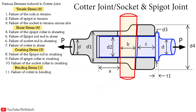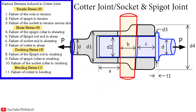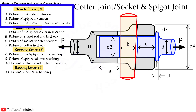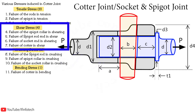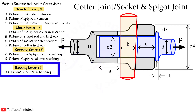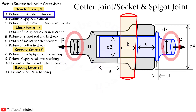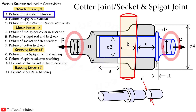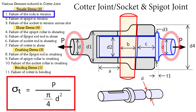Let us analyze the types of failures that occur during application of a cotter joint. There are 3 tensile stresses, 4 shear stresses, 3 crushing stresses, and 1 bending stress. The minimum area of the cotter joint is the diameter of the rod, i.e., small d. The first failure occurs at the minimum area, i.e., tensile stress in the rod, which equals load P divided by the cross-section area of the rod: pi by 4 times d squared.